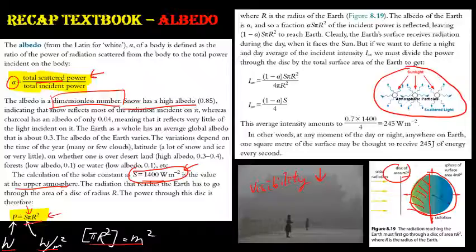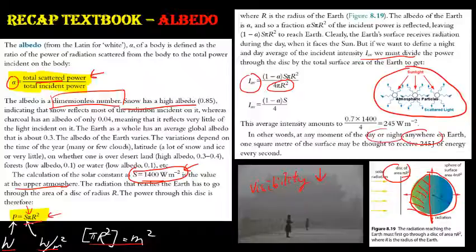To find the average intensity over the whole Earth, divide by the total surface area 4πR². The factor (1 − α) accounts for the fraction actually absorbed, since α is reflected. Therefore, the average absorbed intensity is: I = S(1 − α) / 4.